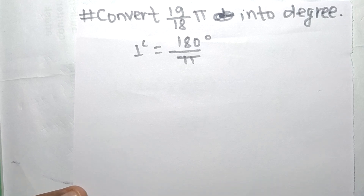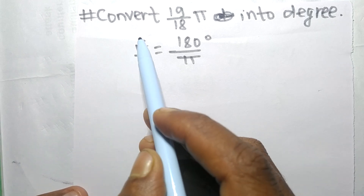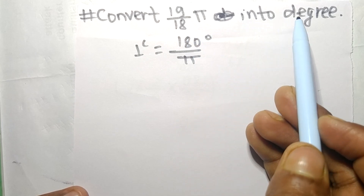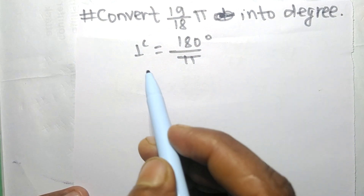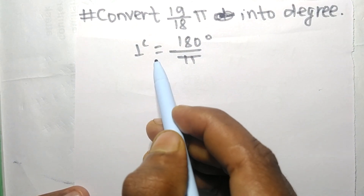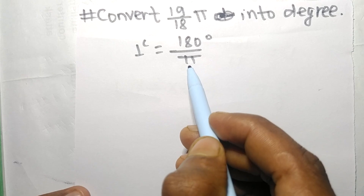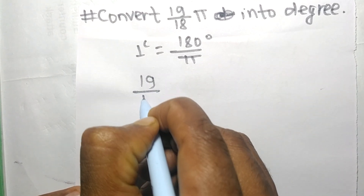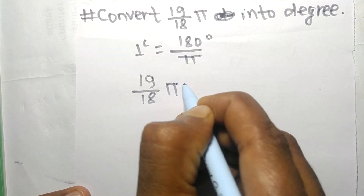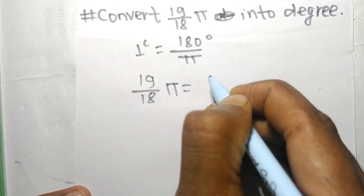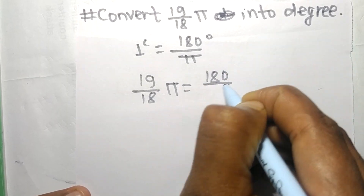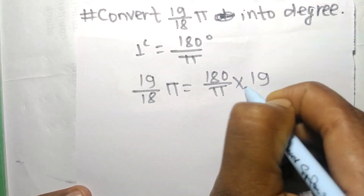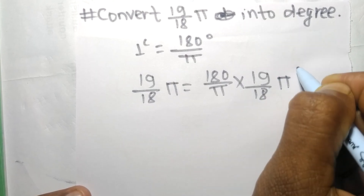Today in this video we shall convert 19/18 π into degrees. One radian is equal to 180/π degrees, so 19/18 π is equal to 180/π multiplied by 19/18 π degrees.